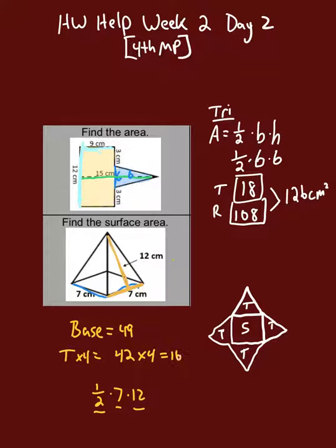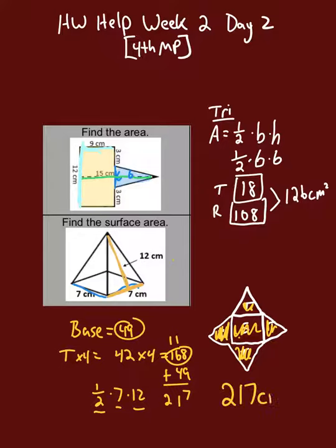I get 168. So here's what I know: each triangle is 42, so there's 42, 1, 2, 3, 4—that's 168. Plus the square is 49. So if we add 168 and 49, you get 217, and our total surface area is 217 square centimeters.